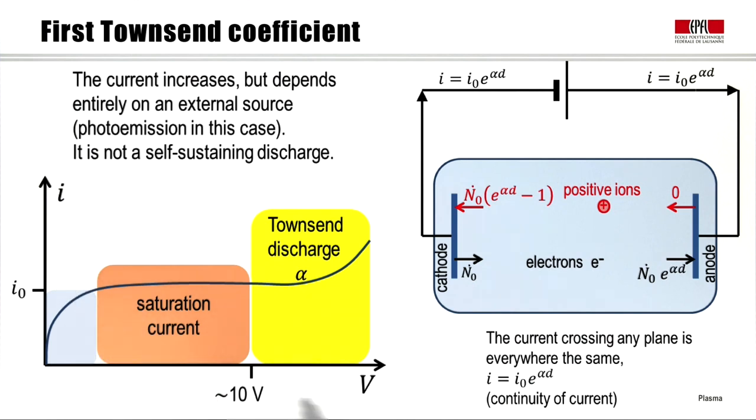So, if we go back to our current voltage graph, we find that beyond several volts, beyond the saturation current, we enter the Townsend discharge regime defined by alpha, where the current is increasing exponentially with distance.